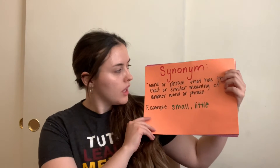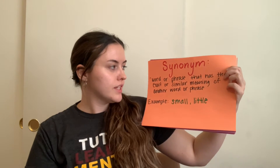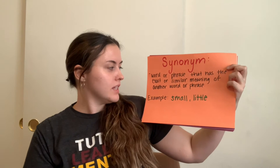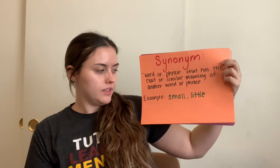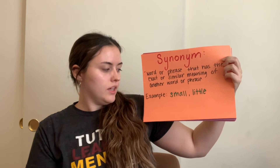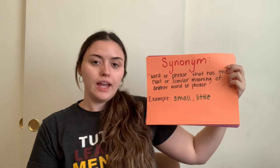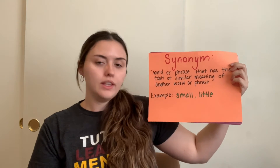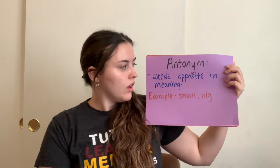The first thing I have for you today is synonym, which is a word relationship. A synonym is a word or phrase that has the exact or similar meaning of another word or phrase. A simple example I have for you today is small and little, which mean basically the same thing.